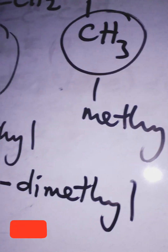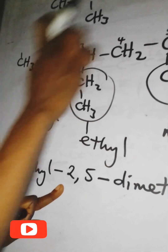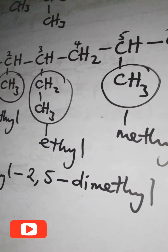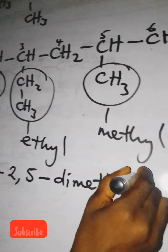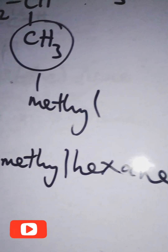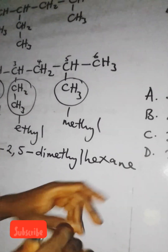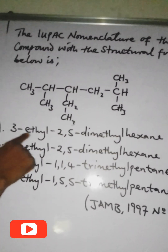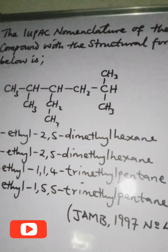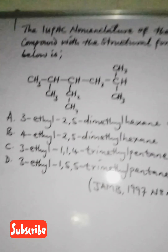We have now named all the branches: 3-ethyl, 2,5-dimethyl. The longest chain has six carbons, so it's hexane. The full name is 3-ethyl-2,5-dimethylhexane. Checking the options — that is option A: 3-ethyl-2,5-dimethylhexane, and that is the correct answer.